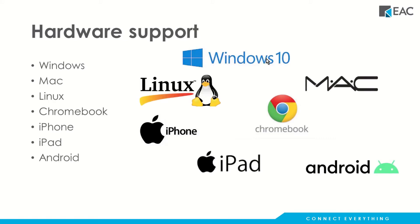Hardware support is pretty much BYOD — bring your own device. So if you're on Windows, Mac, Linux, Chromebook, or even a phone, you can access Onshape. Again, that's the benefit of being in the cloud.